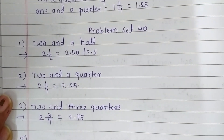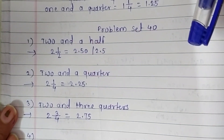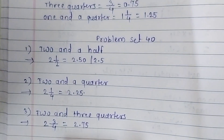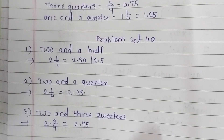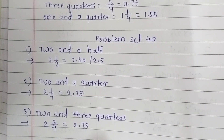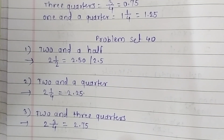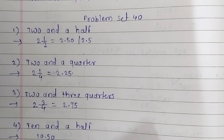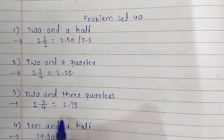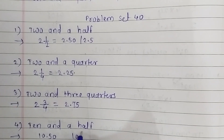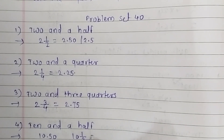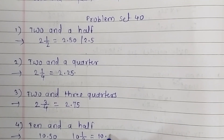Now the fourth question is ten and a half. In decimal form it is written as ten point five zero. Ten and one upon two is equal to ten point five zero.